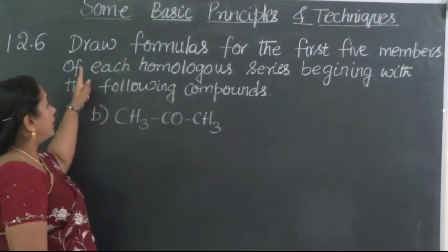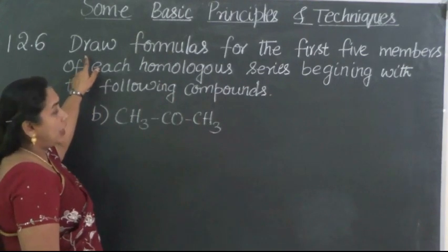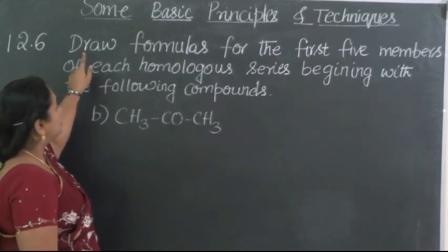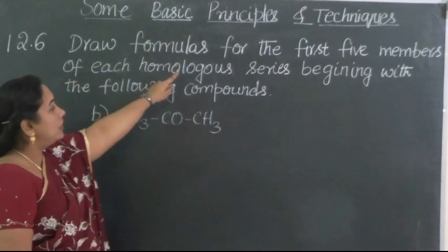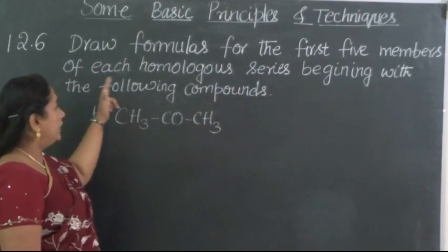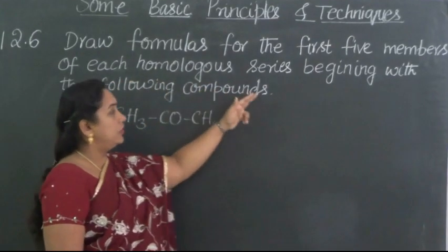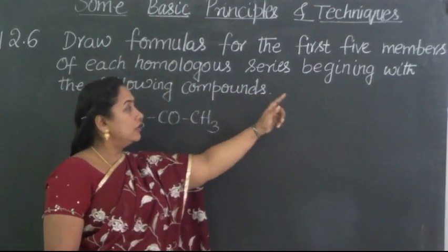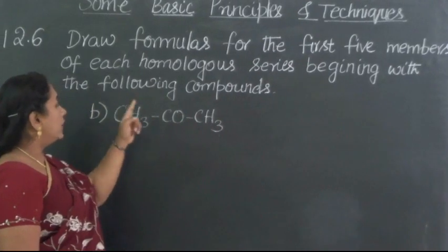Now again I will repeat the question. What is the thing asked from us to be done? We can draw formulas for the first five members of each homologous series beginning with the following compounds.